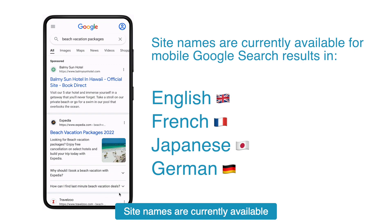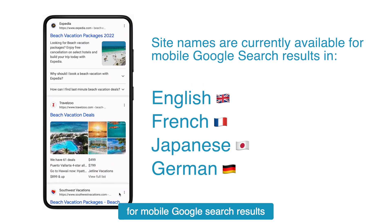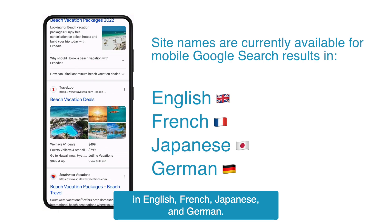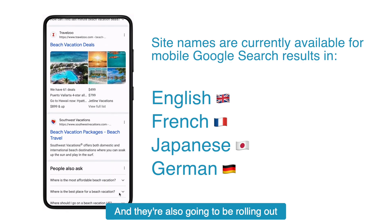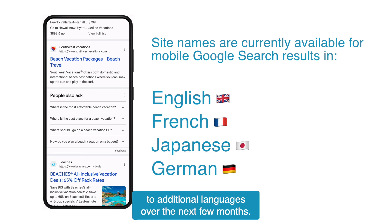Site names are currently available for mobile Google search results in English, French, Japanese, and German. They're also going to be rolling out to additional languages over the next few months.